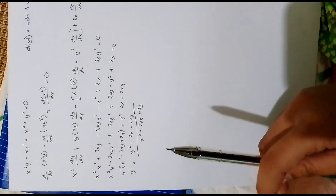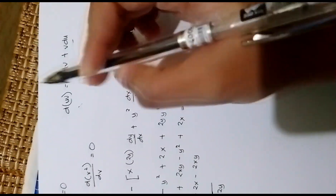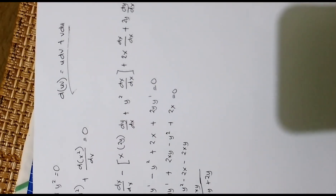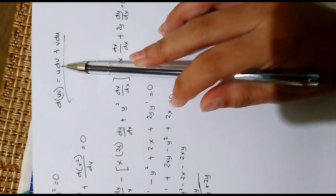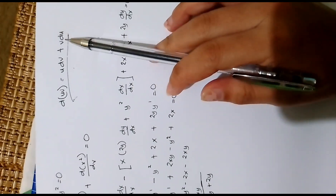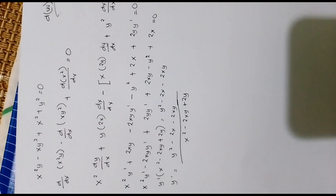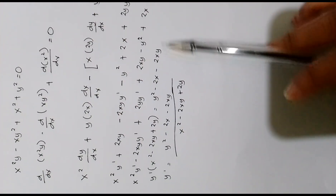Now this is a derivative of a product. Recall the product rule: the derivative of uv is equal to u dv plus v du — copy the first times the derivative of the second, plus copy the second times the derivative of the first.